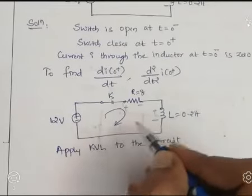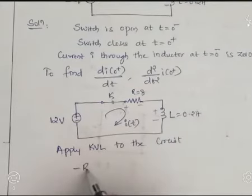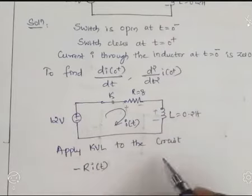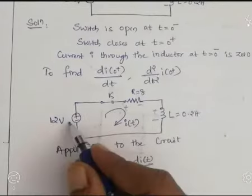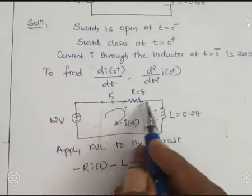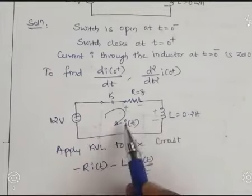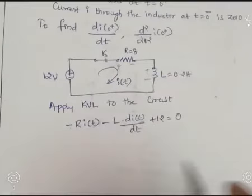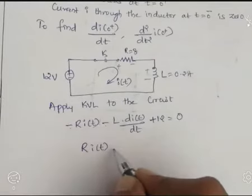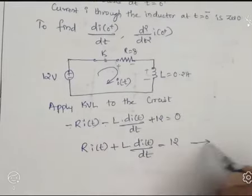Current I(t) is flowing through the loop. Applying KVL, starting here: minus R·I(t) minus L·dI(t)/dt — the arrow mark of current points toward minus for the resistor and inductor — then plus 12 equals 0, since the current points toward plus for the voltage source. Rearranging, we get equation 1: R·I(t) + L·dI(t)/dt = 12.